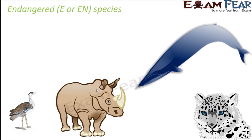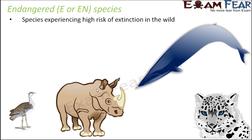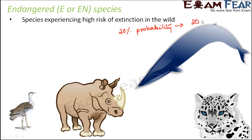Endangered species, often denoted E or EN, experience a high risk of extinction in the wild. These species have a 20% probability of extinction in the next 20 years. This measures how much risk a species has of becoming extinct.